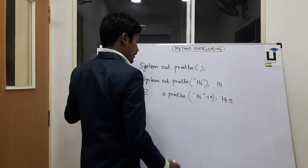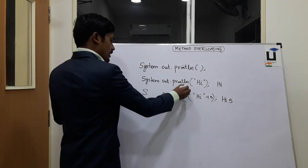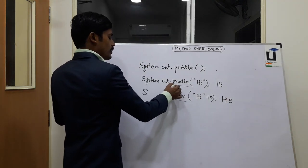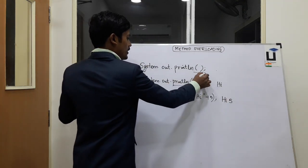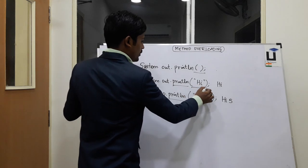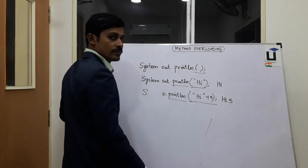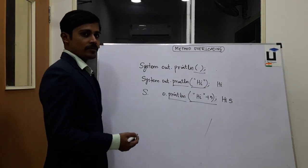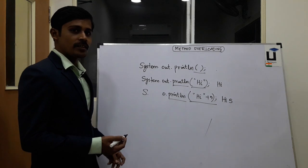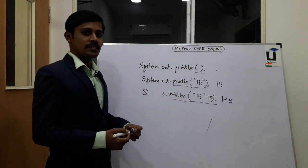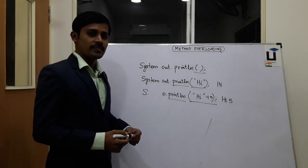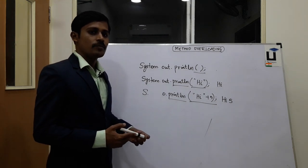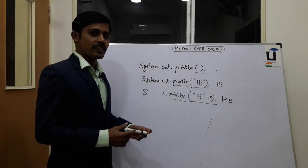Correct? Same method name with zero arguments, with one argument, with two arguments — same method name with a different number of arguments. What does that mean? Method overloading.